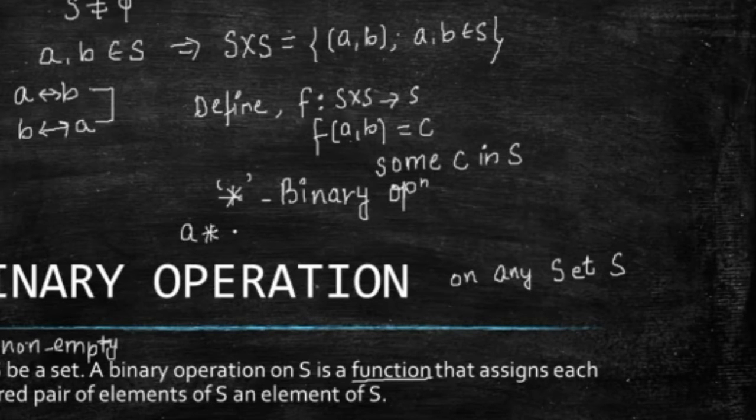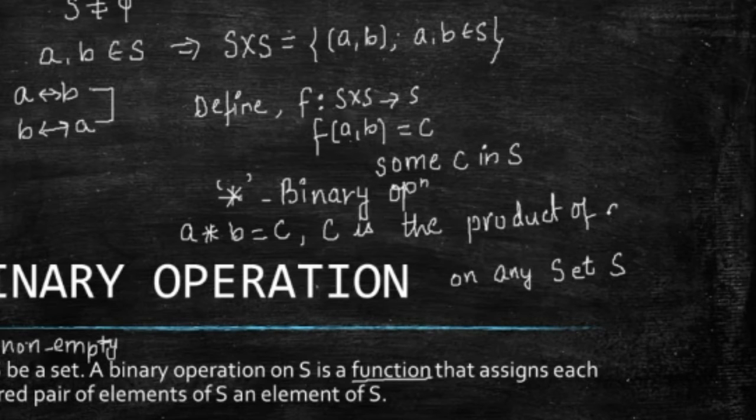And say, C is the product, C is the product of A and B. Quite logical too, because we are operating A with B, and we are getting something in return, which is from S only, and we'll say that C is the product of A and B.